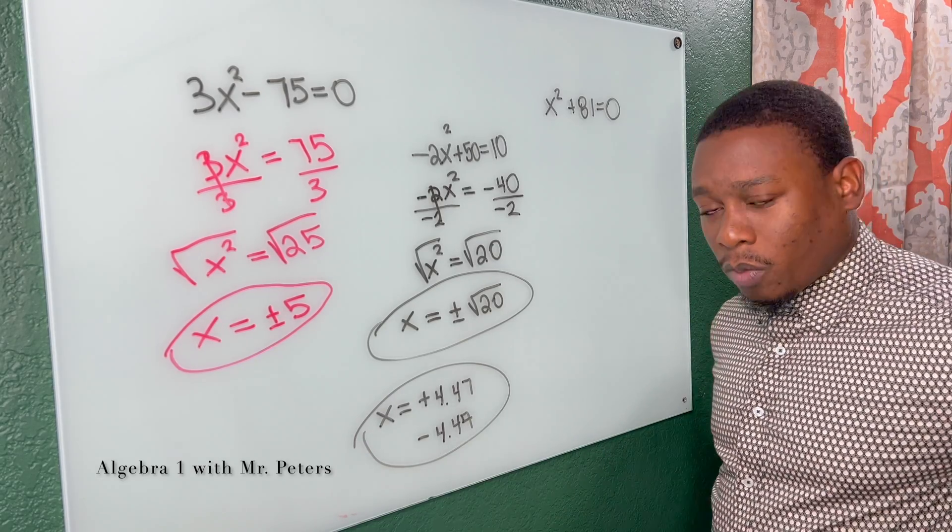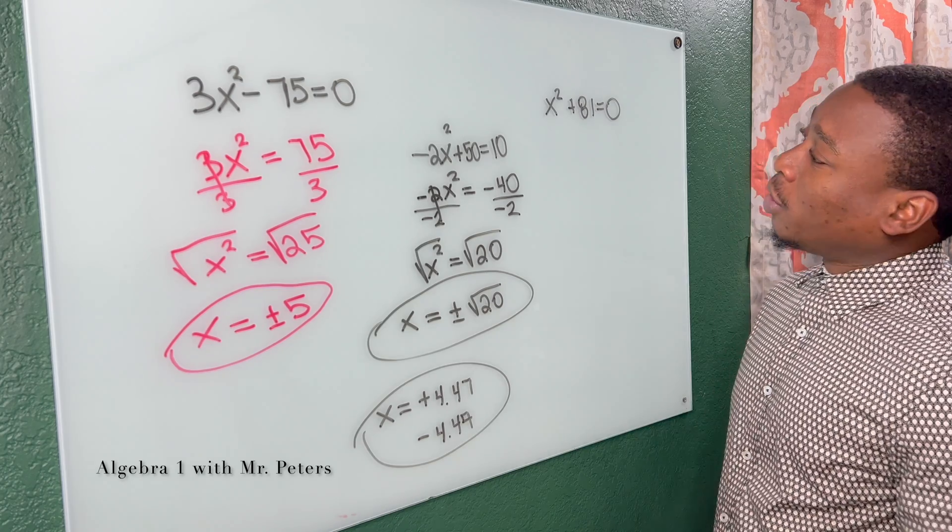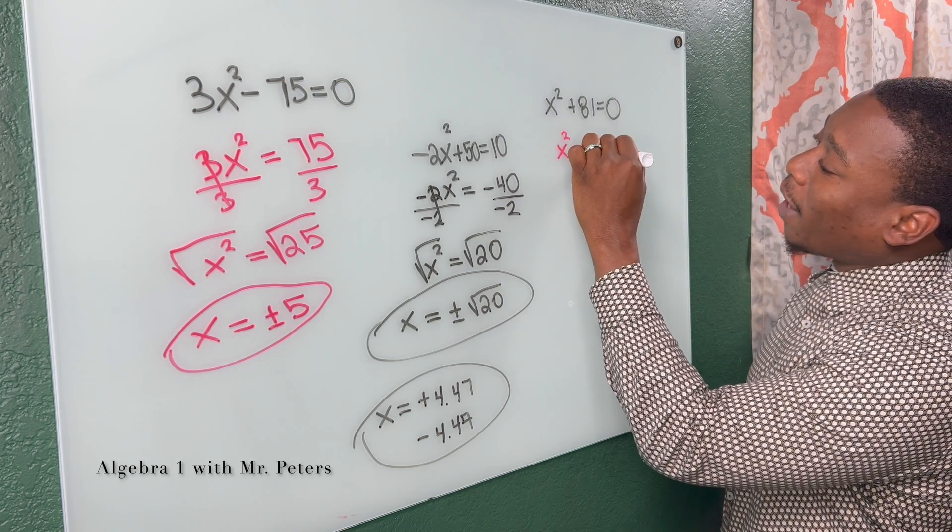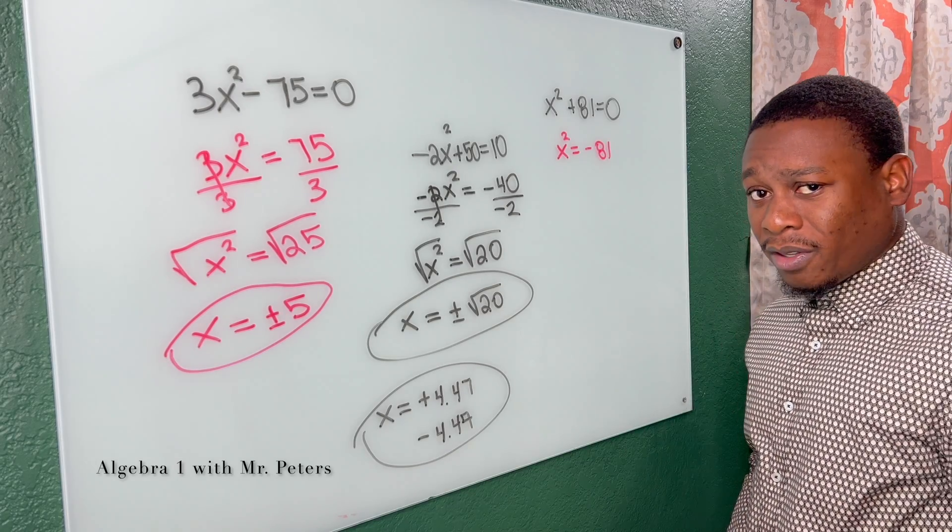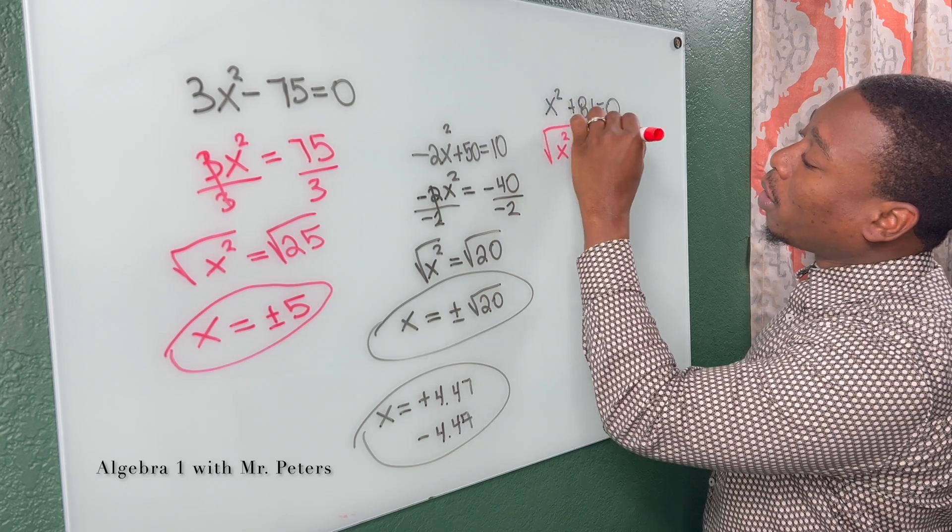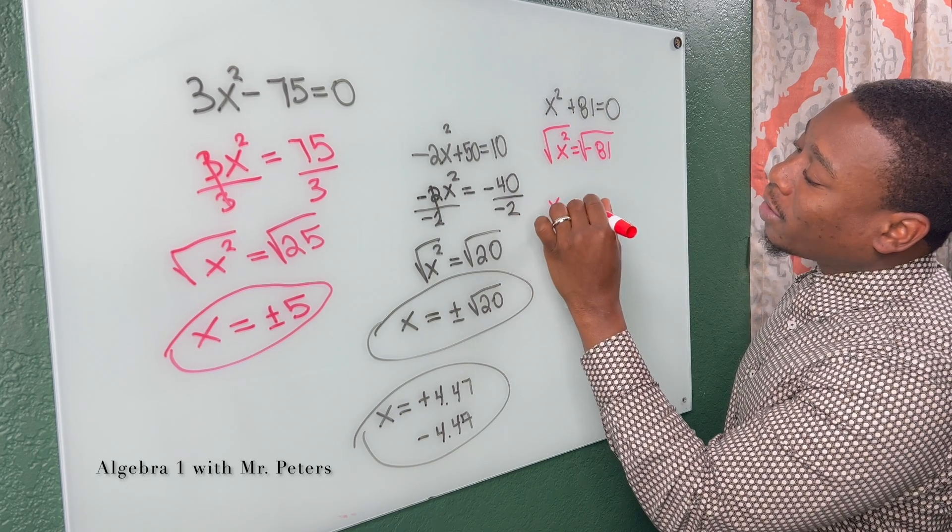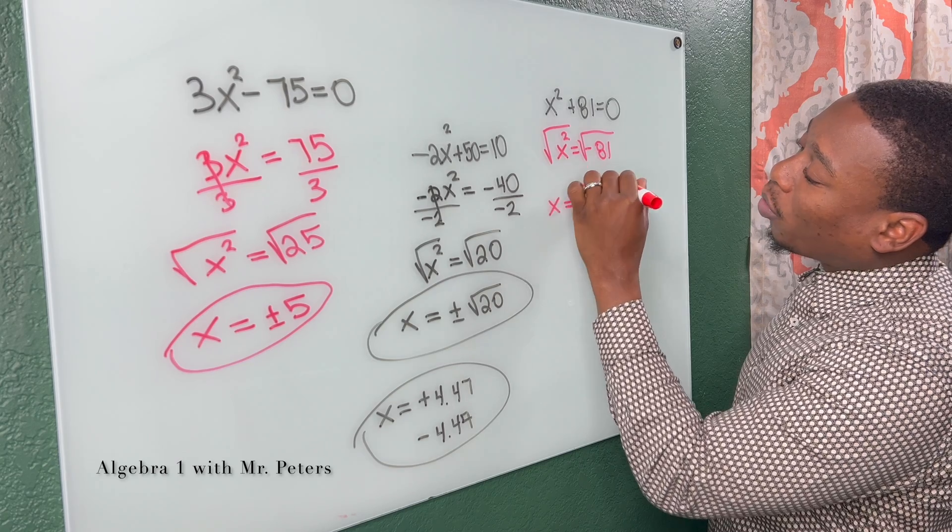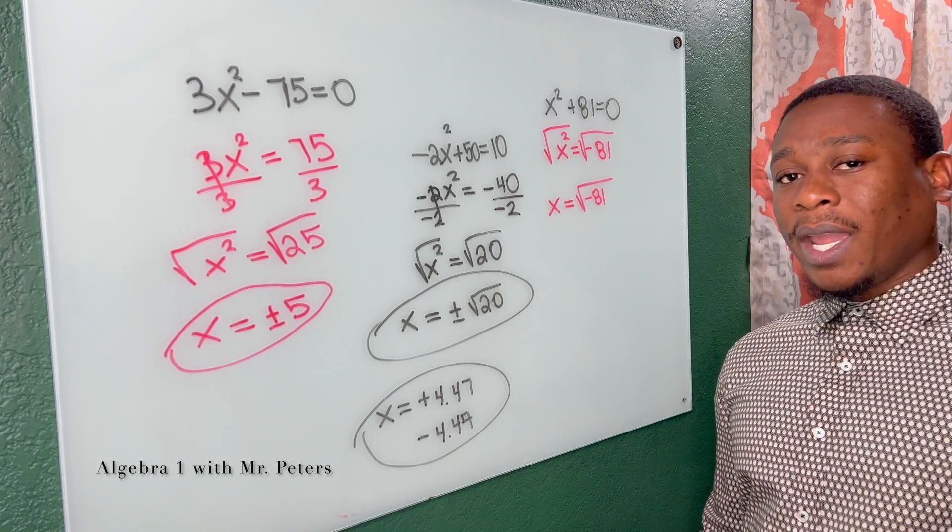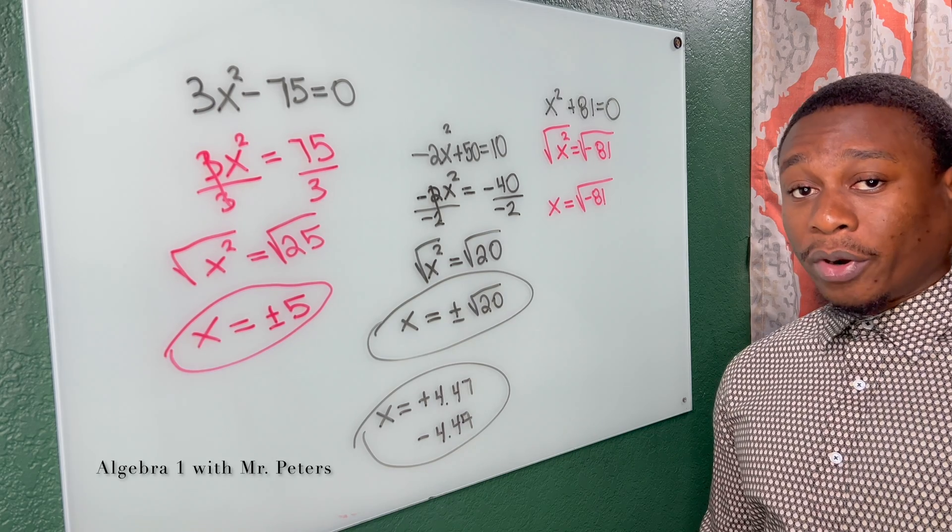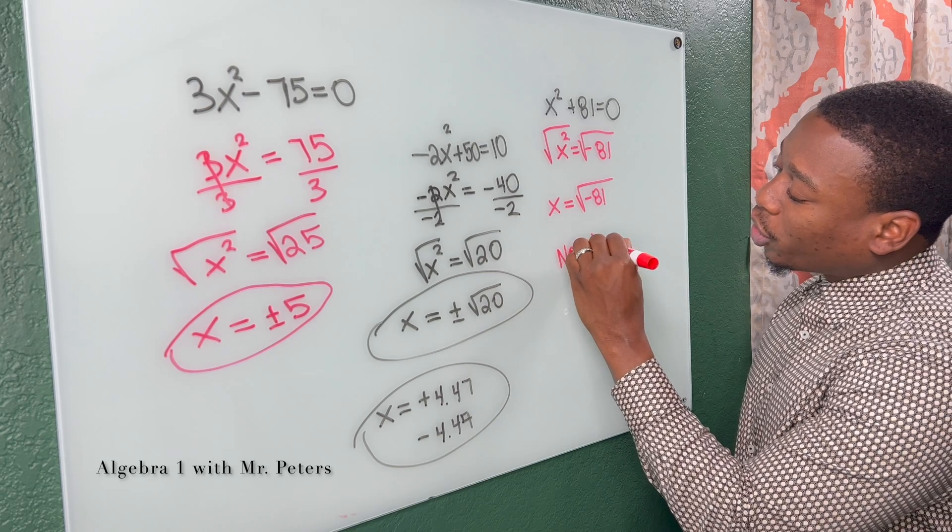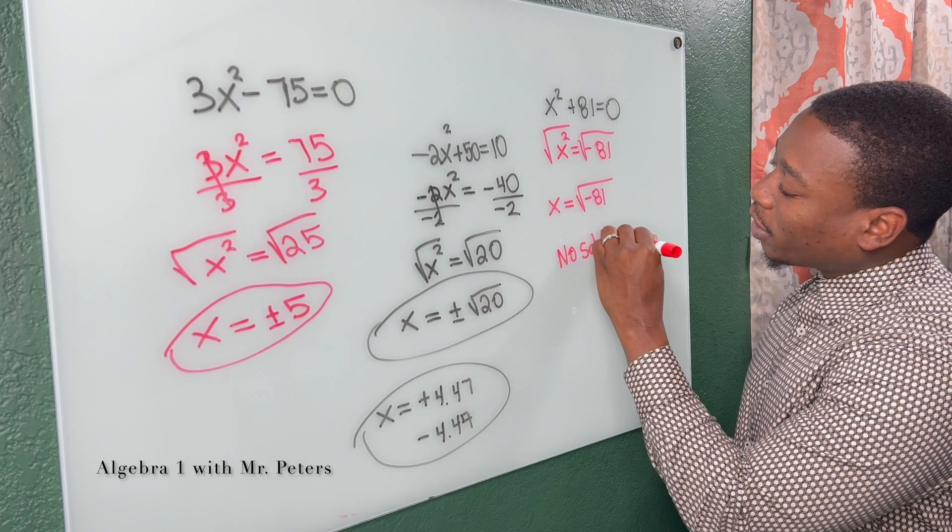Now the last one is a little different. So after we get x squared by itself, we notice that 81 is negative. And like I said, that should raise the eyebrow. So we continue going and we notice that x is equal to the square root of negative 81. And like I just told you guys, we can't take the square root of negative number. So we know that there is no solution to this example.